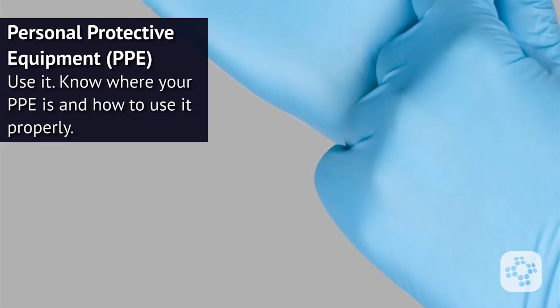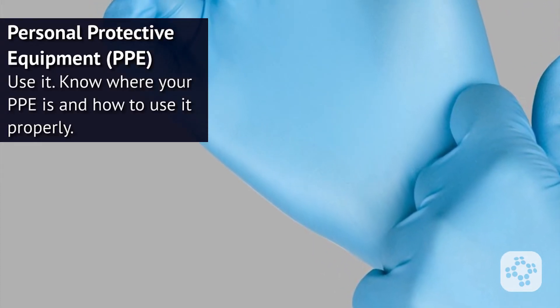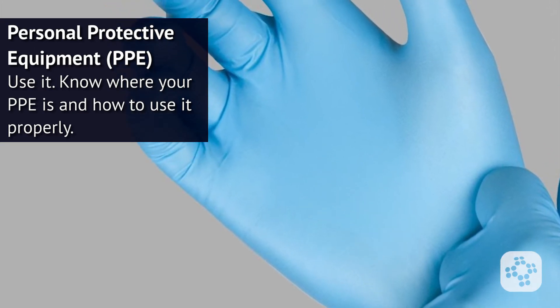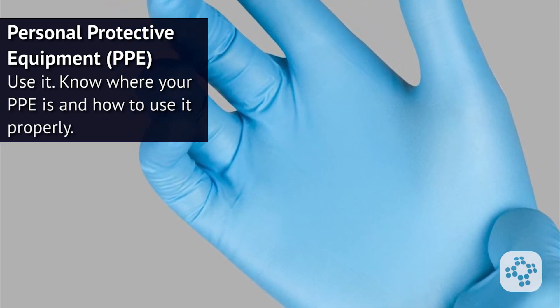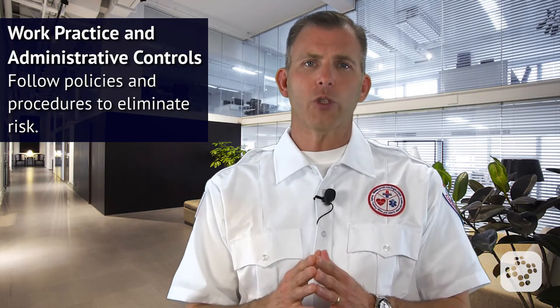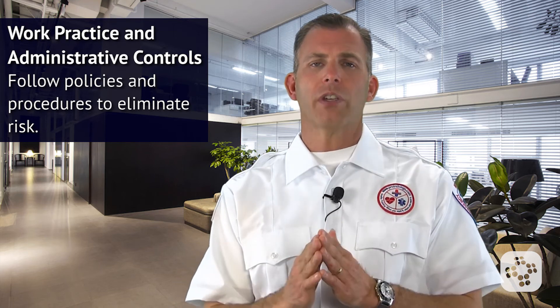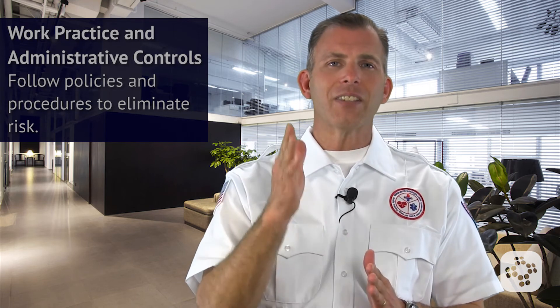Personal protective equipment, otherwise known as PPE — use it. Know where your personal protective equipment is and know how to use it properly. And then work practice and administrative controls: following policies and procedures that eliminate the risk. These different steps will make your workplace and your work activities much, much safer.